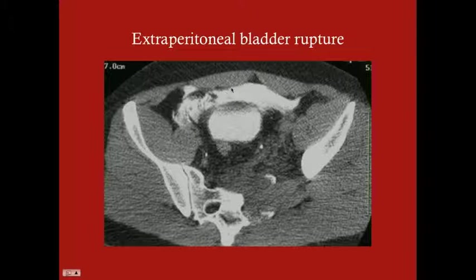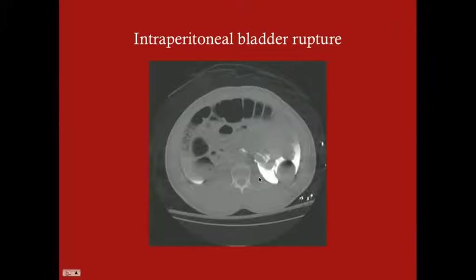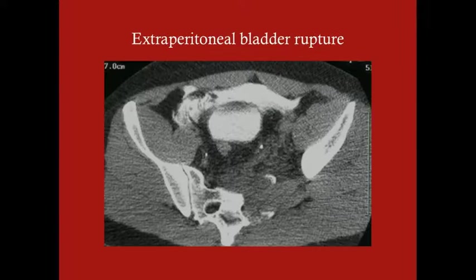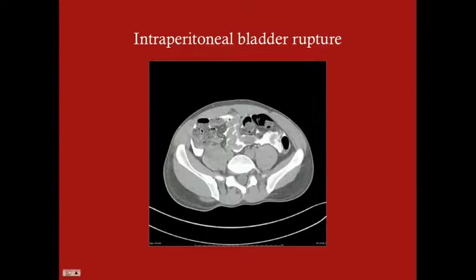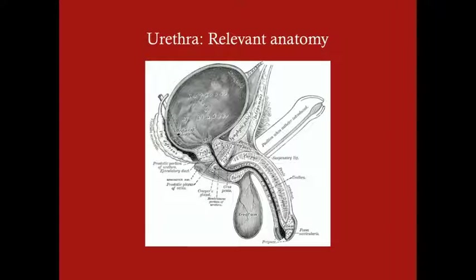Here's a more obvious example. You can see contrast here and here's the bladder. For intraperitoneal bladder rupture you need to look a little further up than the bladder itself - go just above and look for contrast in the peritoneum. You can see contrast in the peritoneum outlining the bowel walls. Go up further into the peritoneum to look there.